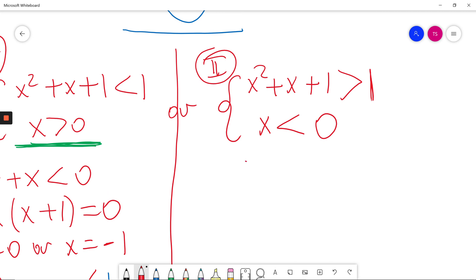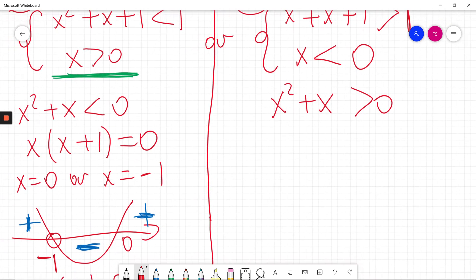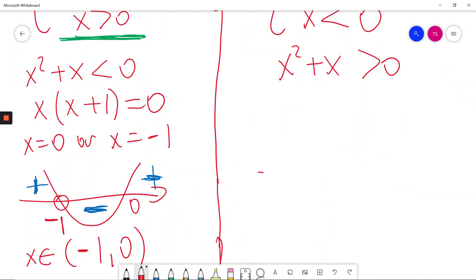Similarly, minus 1 on both sides. So x² + x has to be more than 0. And I solve this in a similar way as before. This is the same thing.